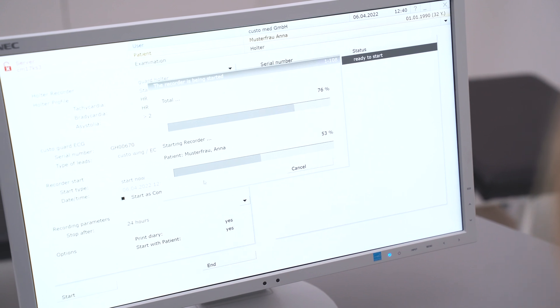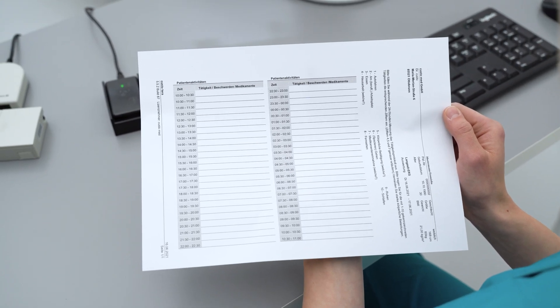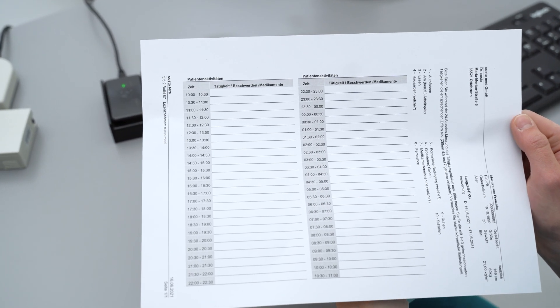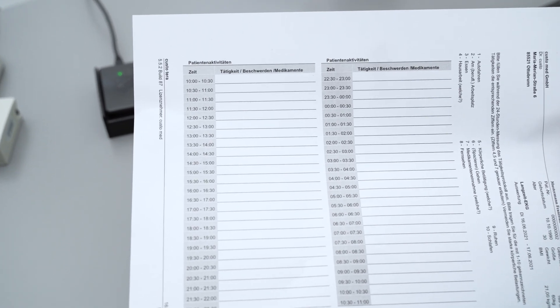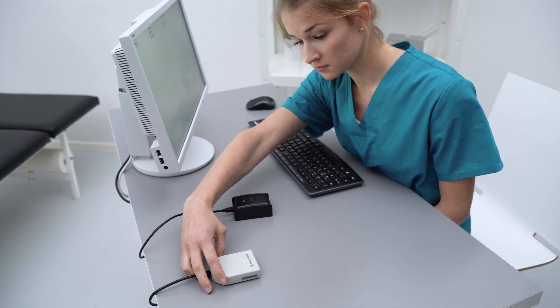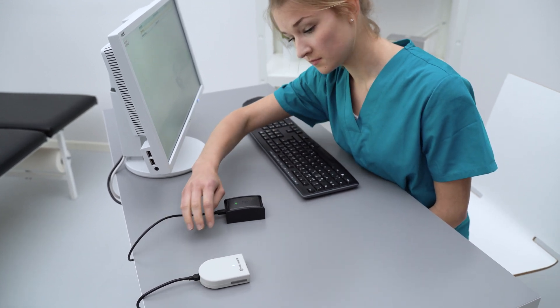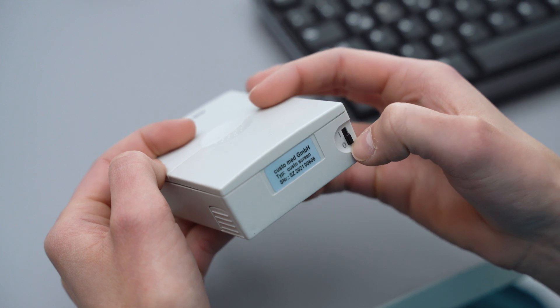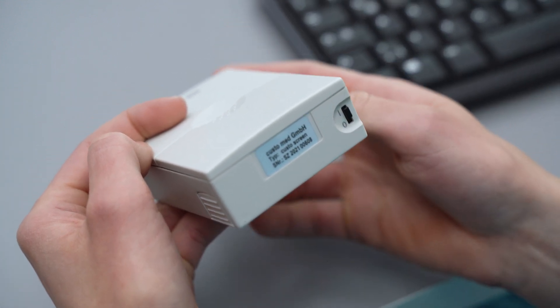In addition, a patient diary is printed and the software automatically switches to Ambulatory Blood Pressure Monitoring. First of all, make sure that the infrared interface CustoCom IR is connected to the PC via USB.